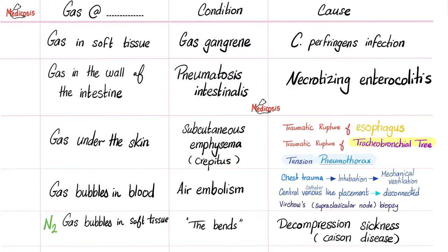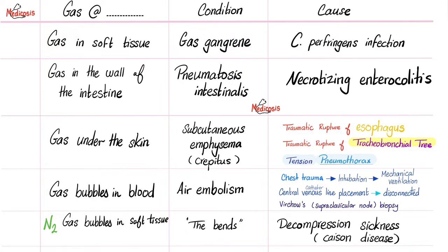It could also be caused by less severe conditions. Gas bubbles in your blood is air embolism — could be caused by chest trauma, intubation, and mechanical ventilation. When you're ventilating traumatized tissue, gas is going to escape. Air embolism could also be caused by a central venous line that has been disconnected, or during a sentinel node biopsy procedure where gas escapes near the big vessels. What if we have nitrogen gas bubbles in soft tissue, especially in a diver who ascended rapidly? This is the bends — decompression sickness, previously known as caisson disease.